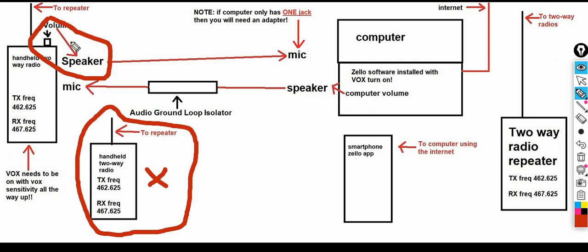Another thing you're going to need is a ground loop isolator — I'll post the link down below. If you do not have this and you plug the cable directly into your two-way radio, it's going to key up the radio and it will stay keyed on forever. You need the ground loop isolator. You can put it on either the mic side or the speaker side — it does not matter, and there's no direction when you hook it up.